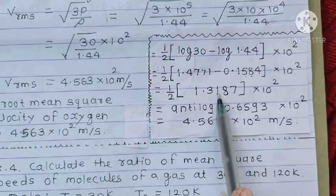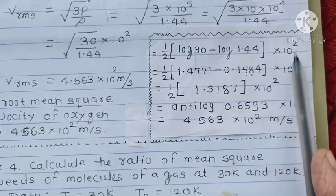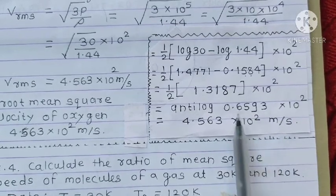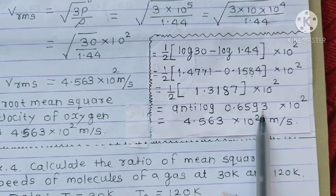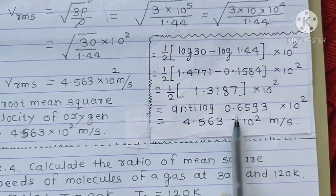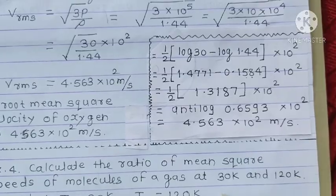1 upon 2 is going to be 0.563. So 10 raised to 2, 0.563 is going to be antilog.